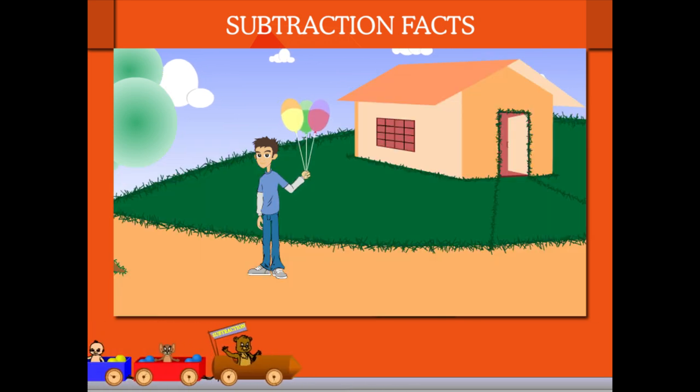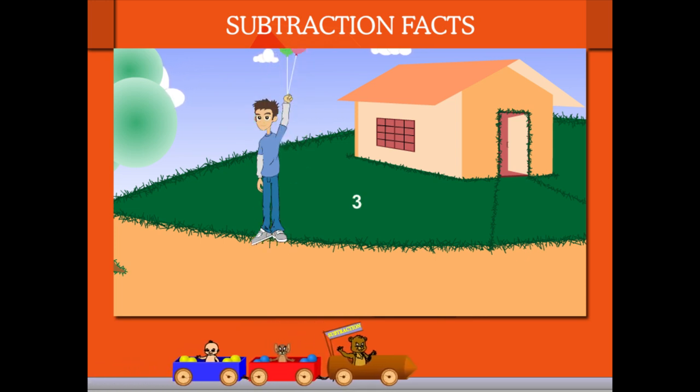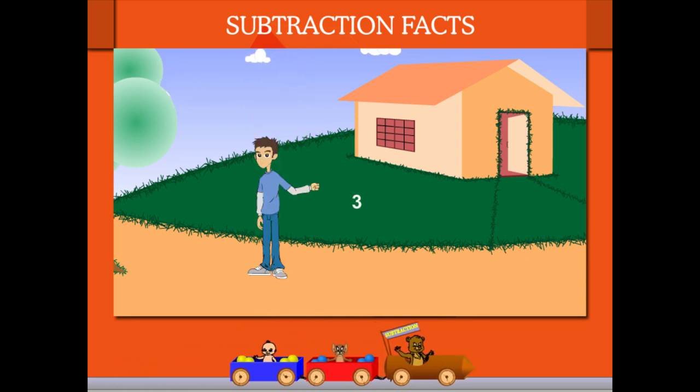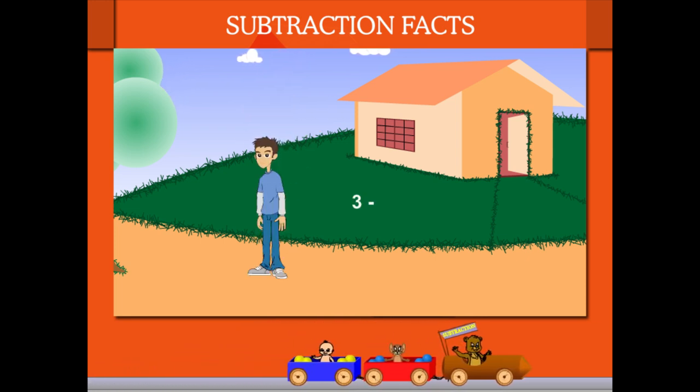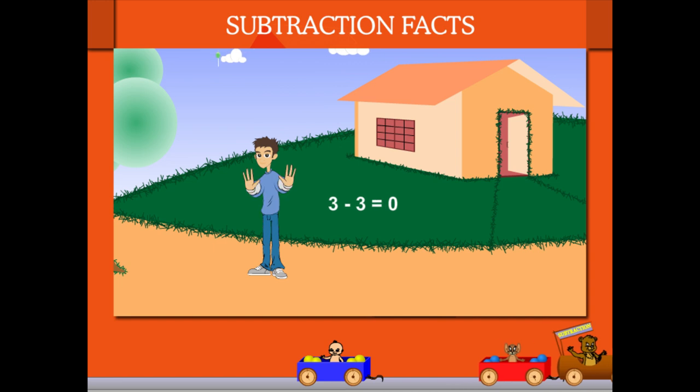Here's Robin again. He has 3 balloons now. He leaves all of them together. Again, he has nothing left.